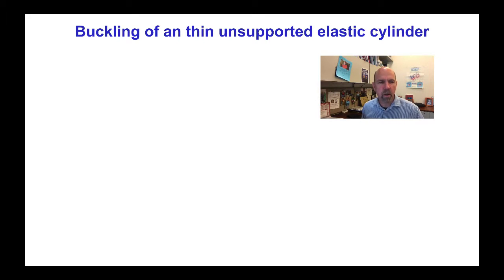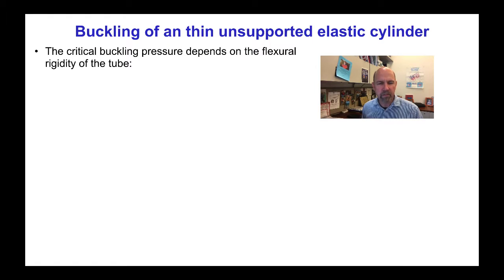If the pressure on the outside of the vein exceeds the pressure on the inside then the vein can buckle. It's possible to do an engineering analysis of a thin unsupported elastic cylinder and although we won't derive it, the critical buckling pressure depends on the flexural or bending rigidity of the tube cross section.